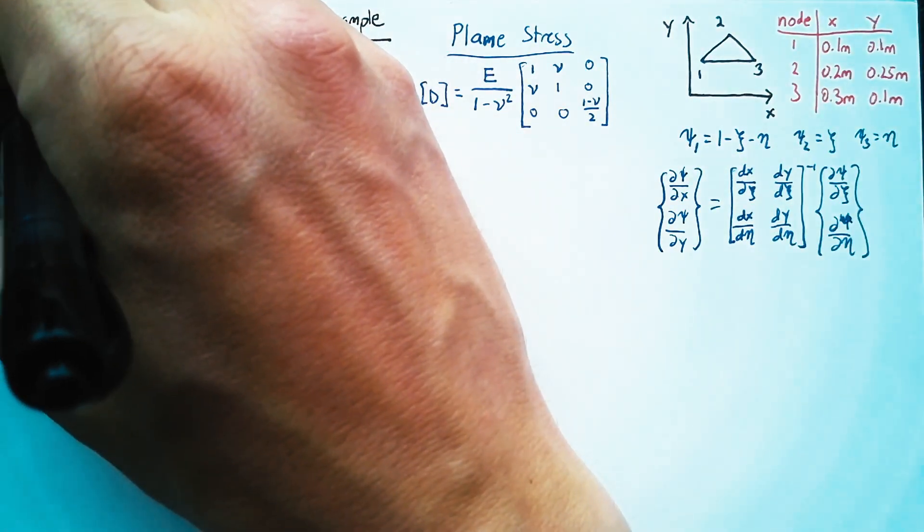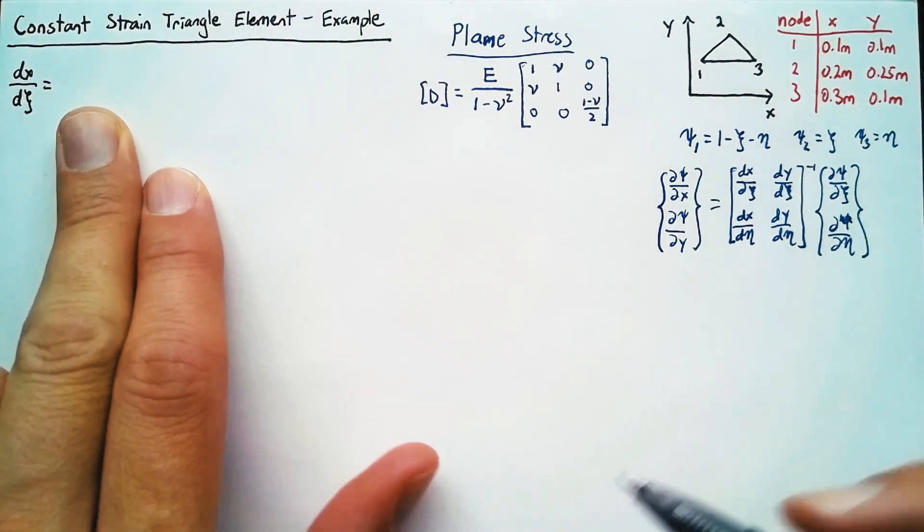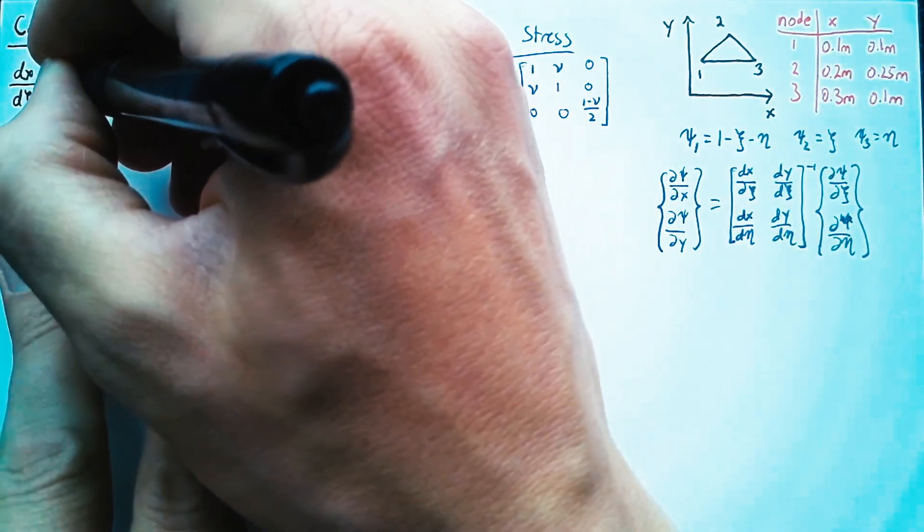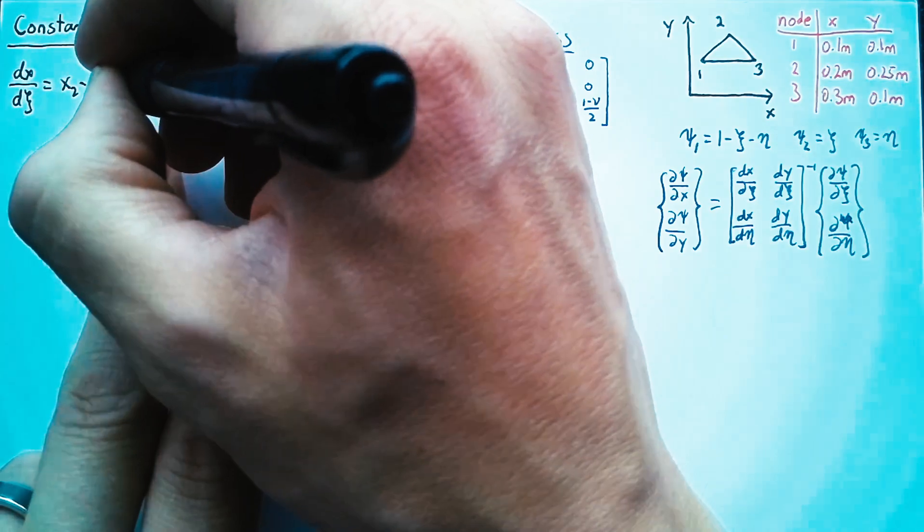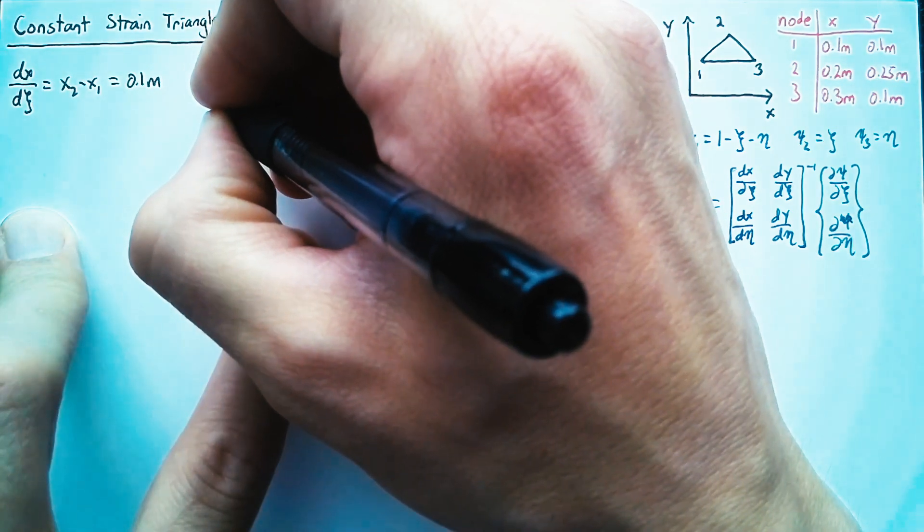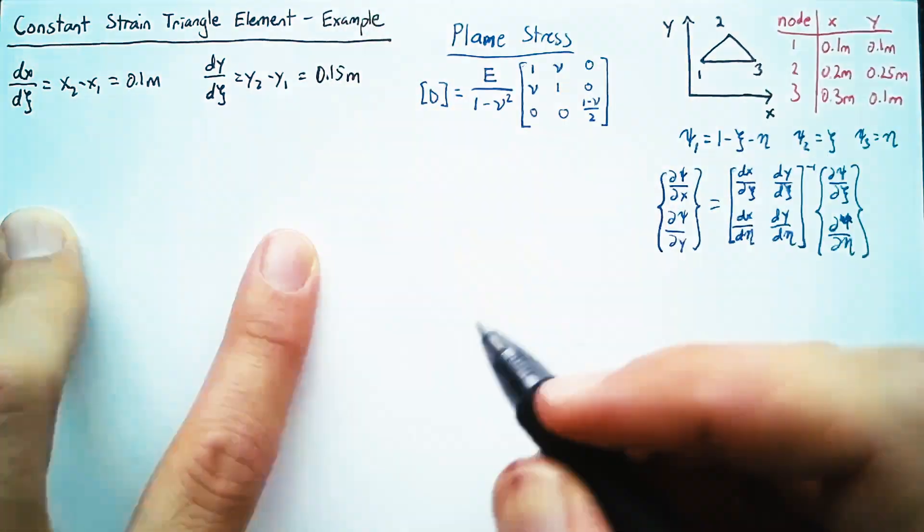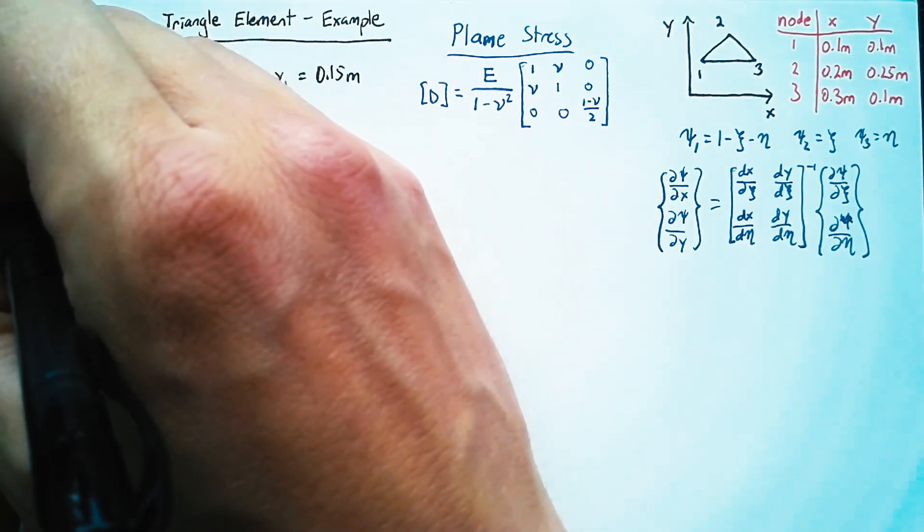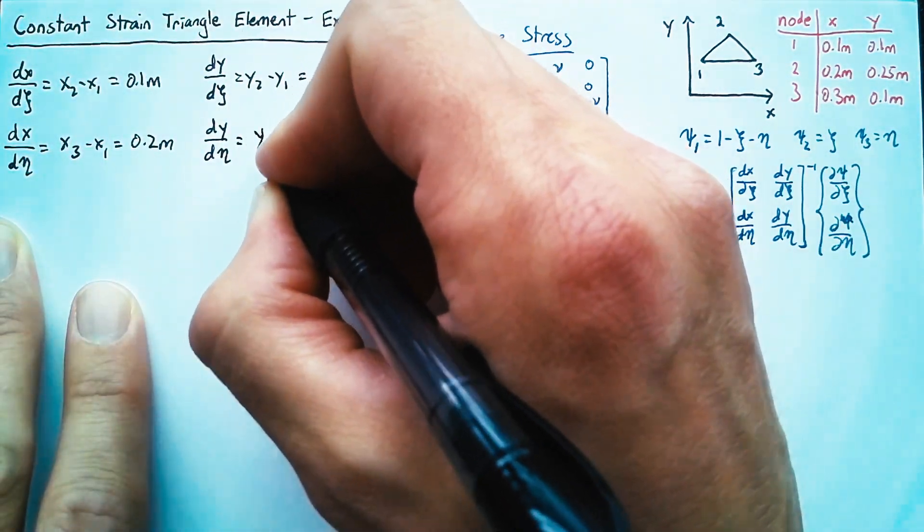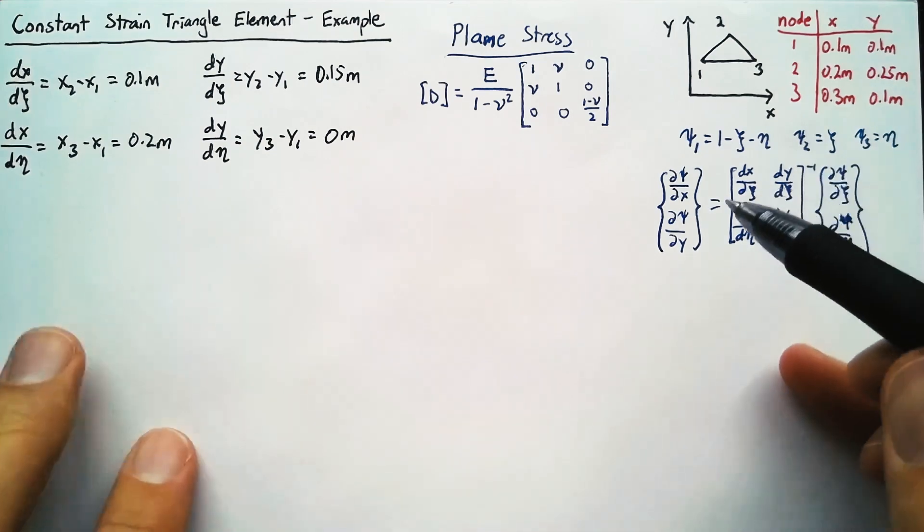So now the elements of our Jacobian dx dx etc are based just on differences in our nodal locations. So dx dx is just x2 minus x1 which in this case is 0.1 meters. And then we can do the same for the derivatives with respect to eta which are just the third node minus the first node. And so again we refer to this matrix as the Jacobian.